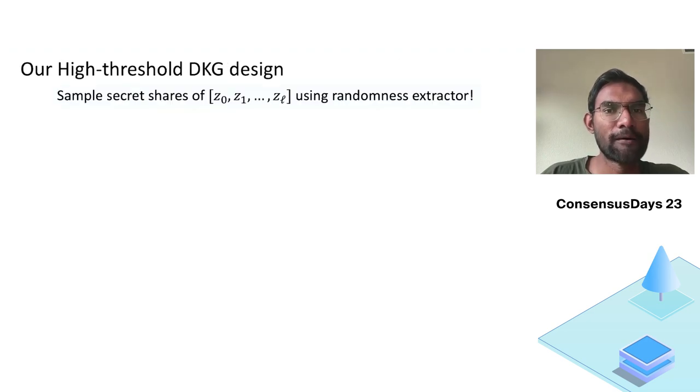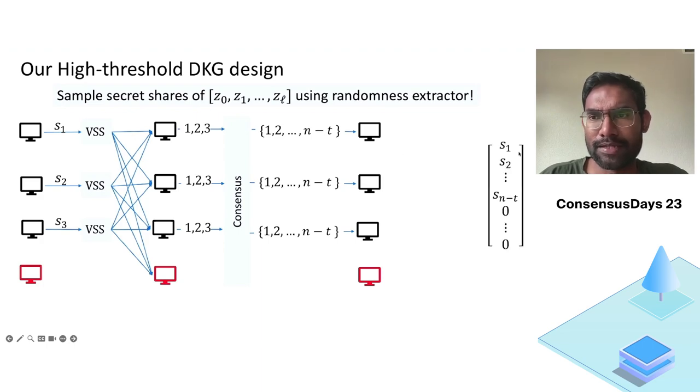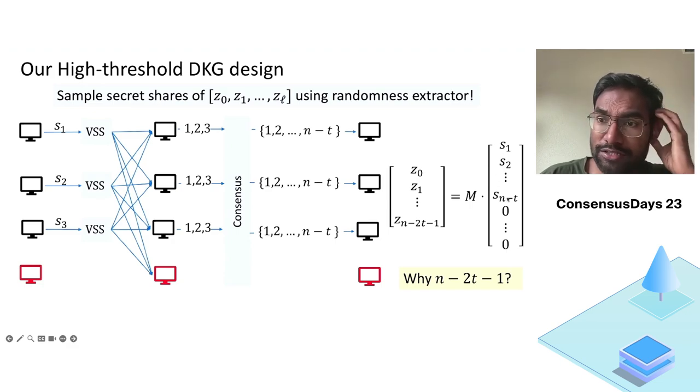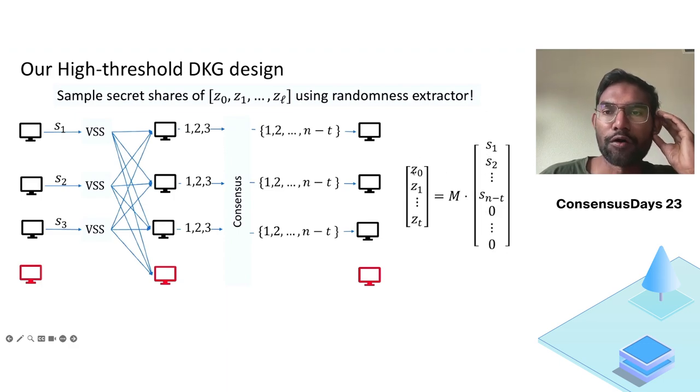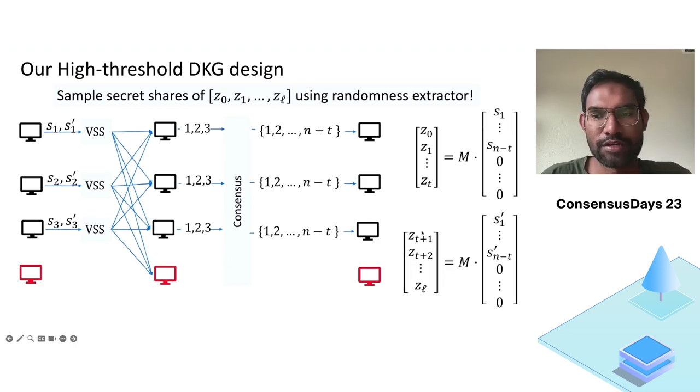So we will use this in our high threshold DKG construction. If you recall, we have to sample l+1 random secrets. So each party will run the general framework. And let's say we program the consensus to be able to output n-t of these indices. Let's say, without loss of generality, these are the first n-t. We can put them as a vector and we multiply with randomness extraction to be able to get random coefficients. These will be secret shared. So why n-2t-1? Because there are n-t non-zero values, and t of them could be from malicious parties. So we'll only be able to output t+1 uniform random values. But we need l+1 of those. How do we do this? Well, we just secret share two random values and then generate the rest of the coefficients using this idea.